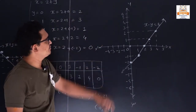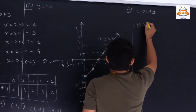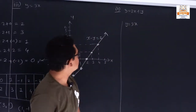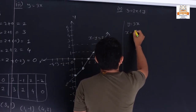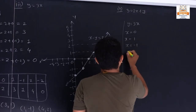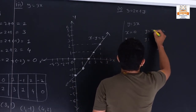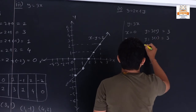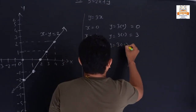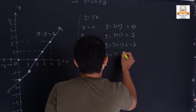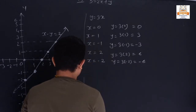Similarly for question 3, the equation is y = 3x. Here the equation is given directly. We can put different values of x: 0, 1, −1, 2, −2. So: 3×0 = 0, 3×1 = 3, 3×(−1) = −3, 3×2 = 6, 3×(−2) = −6. We will now plot the graph.